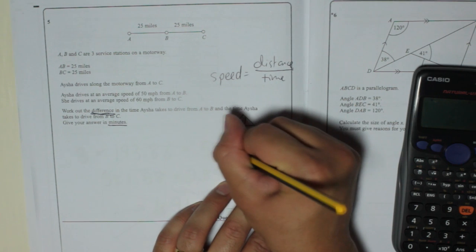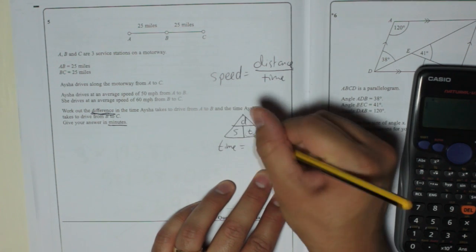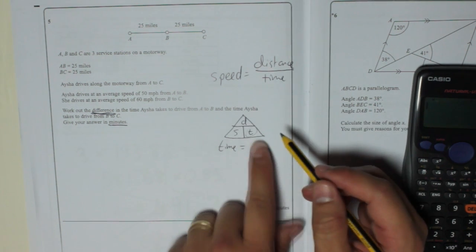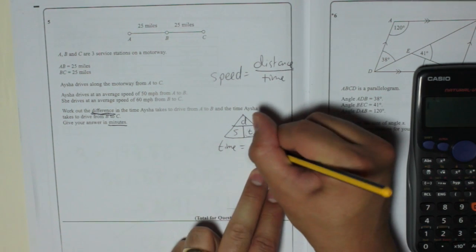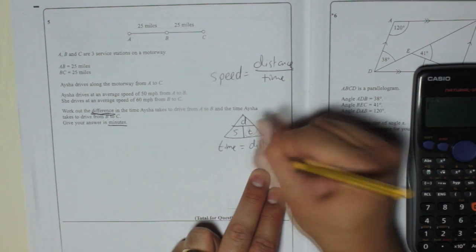So time is equal to distance over speed. Remember, if you want to work out time, you cover it up like that, so it's distance over speed.